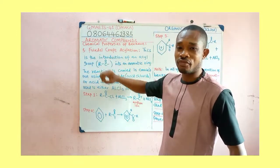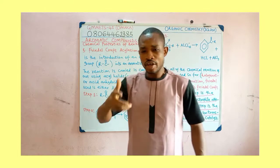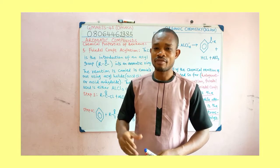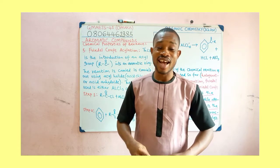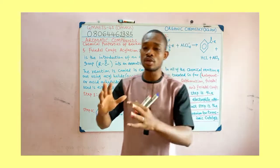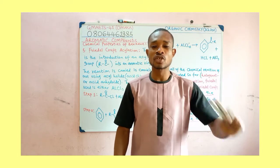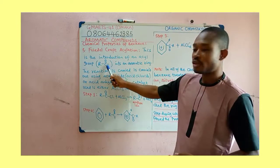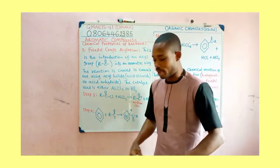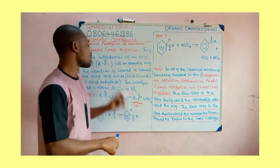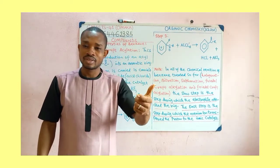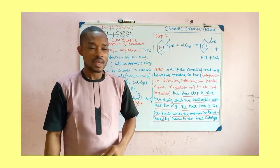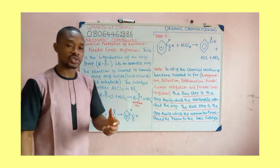Now we want to look at the last chemical property of benzene: the Friedel-Craft acylation. Have you heard of an acyl group before? It comes from derivatives of alkanoic acid. We have acyl chloride and acyl anhydride (acid anhydride). When these groups react with benzene, the reaction is known as Friedel-Craft acylation. What happens is simply the introduction of the acyl group — that is, carbon doubly bonded to oxygen — into the benzene ring. The product formed is called a phenylketone or phenylalkanone. The catalyst used can be aluminium chloride or boron trifluoride.